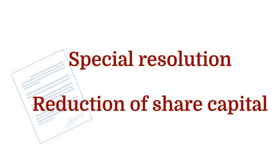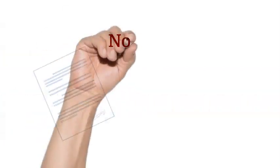For example, a company has issued 1,000 shares of Rs. 100 each and Rs. 80 are paid on each share. In this case, the company may reduce the further liability of Rs. 20 per share by reducing the share of Rs. 100 to Rs. 80 as fully paid shares. In this way, the company's capital will be reduced by Rs. 20,000.